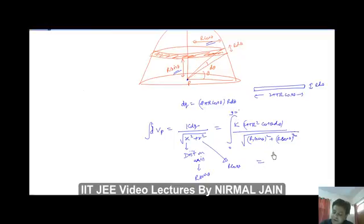So what I get here is K 2π R squared cos theta d theta upon R squared sin squared theta plus R squared cos squared theta, which becomes R squared and its under root is simply R. So R gets cancelled with this R and I have to integrate it 0 to 90 degrees. What I get here is K 2π R.